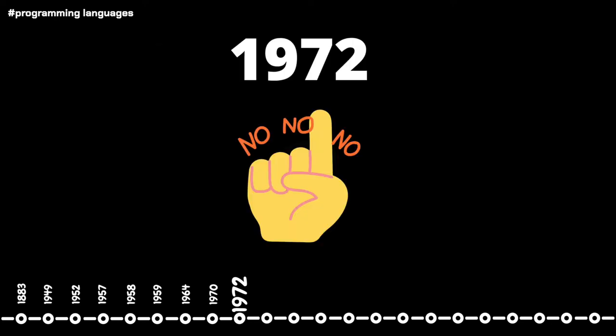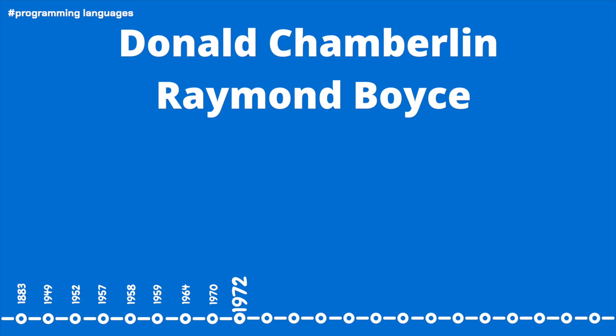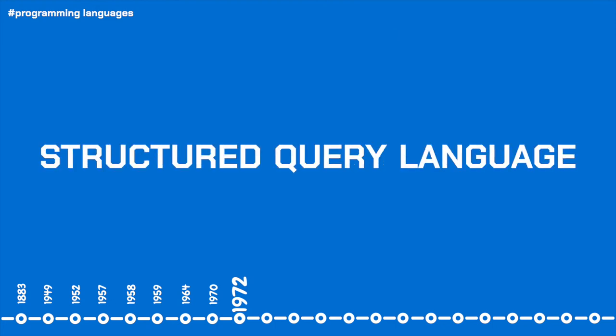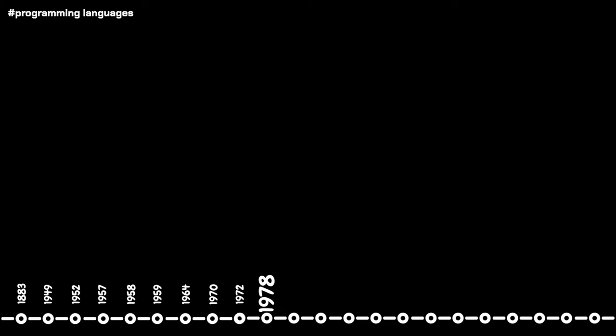Also during 1972, we see the emergence of SQL, also known as SQL, originally developed by Donald Chamberlin and Raymond Boyce at IBM. SQL is an acronym for structured query language. SQL is a programming language designed around querying a database and is still widely used in database management today.